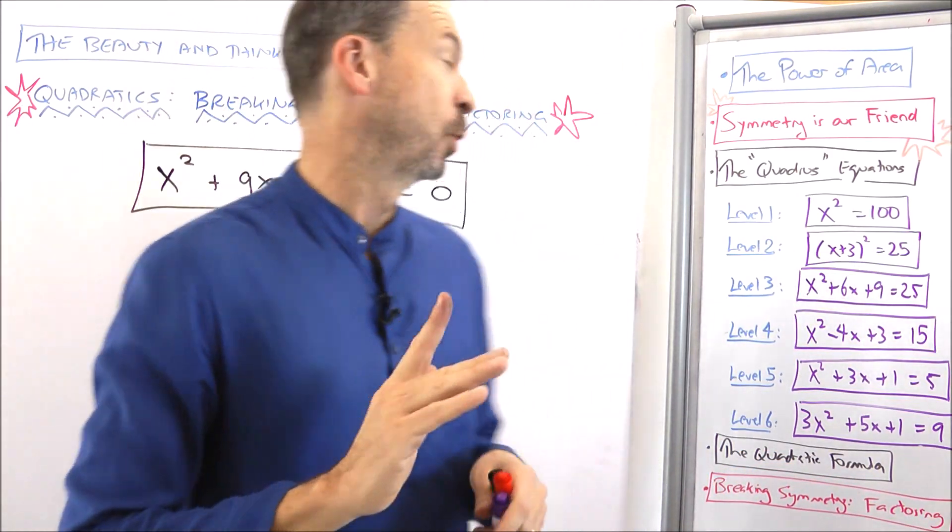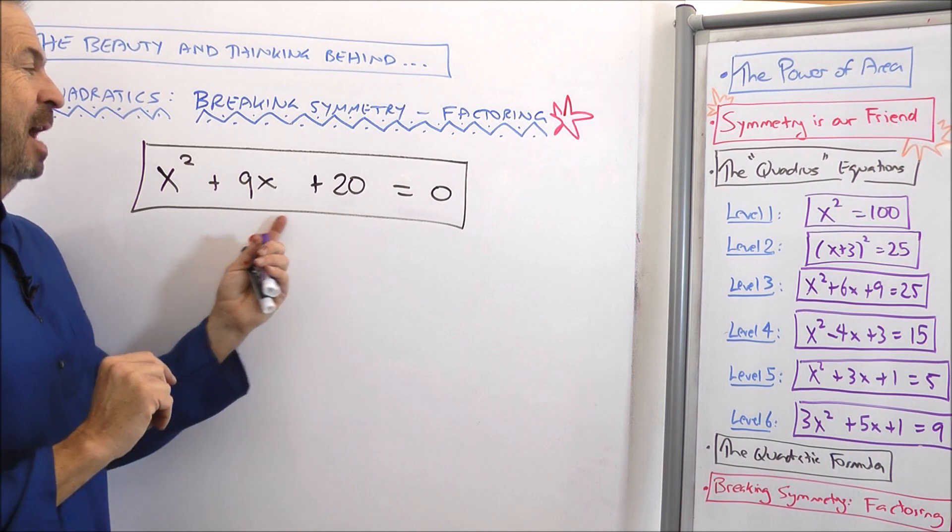Okay, so let's see if we can apply this technique to a new example: x squared plus 9x plus 20 equals 0.